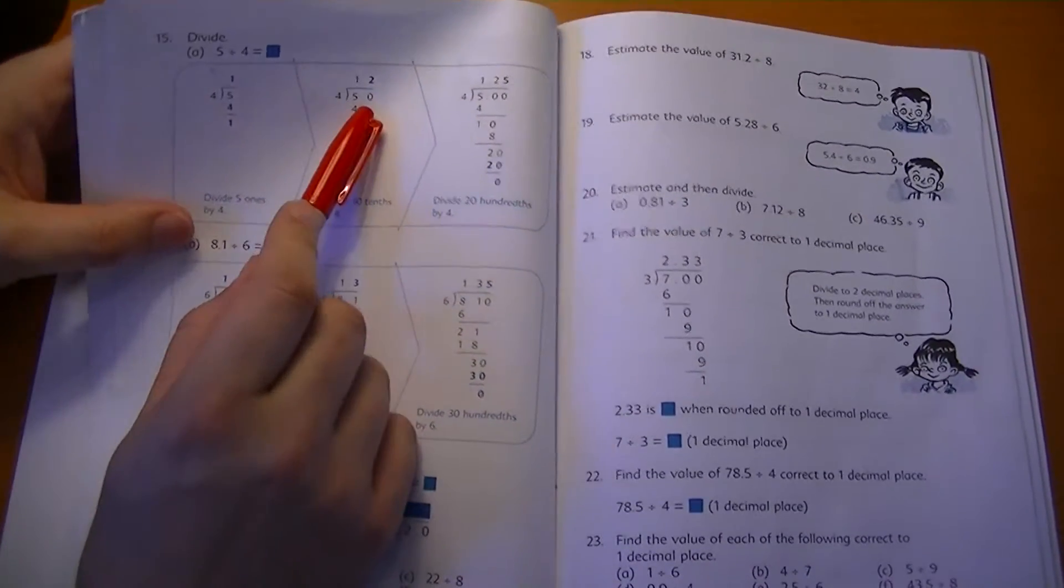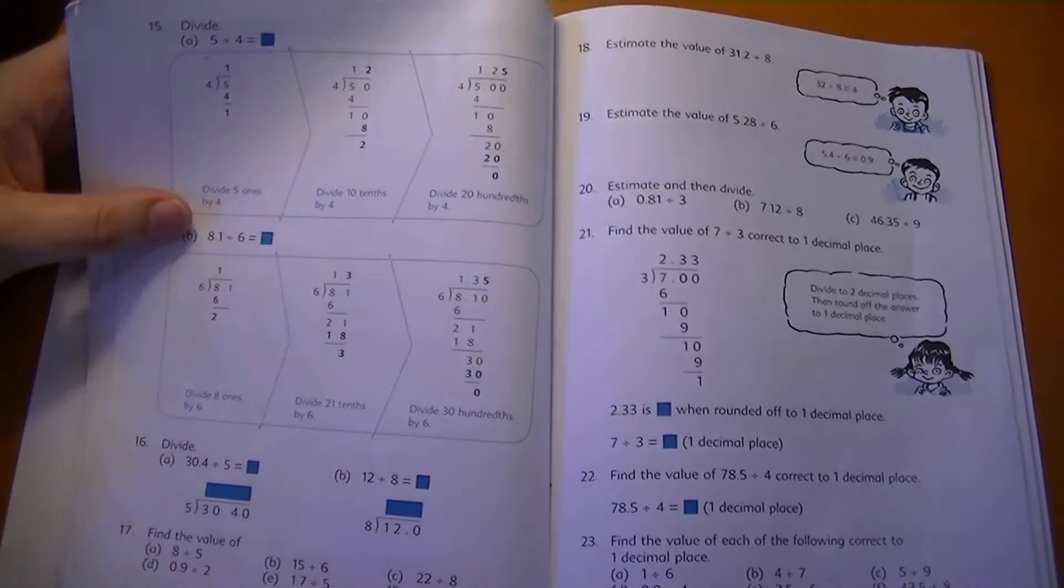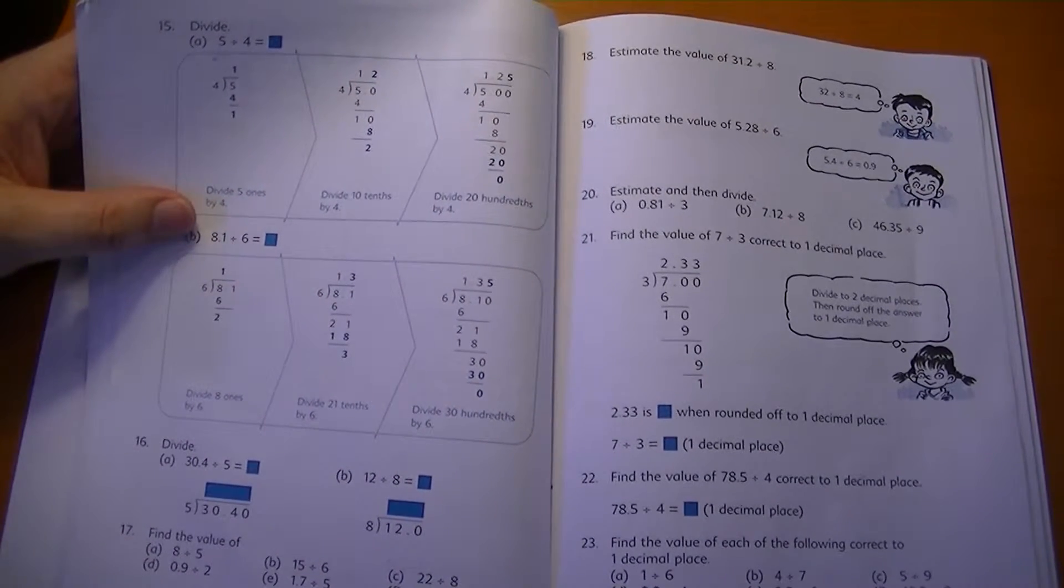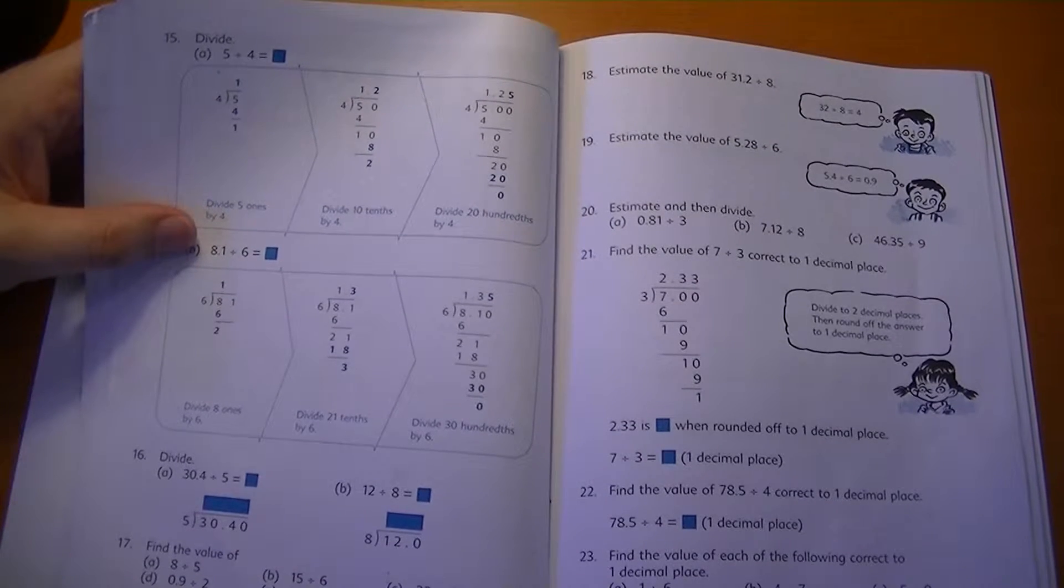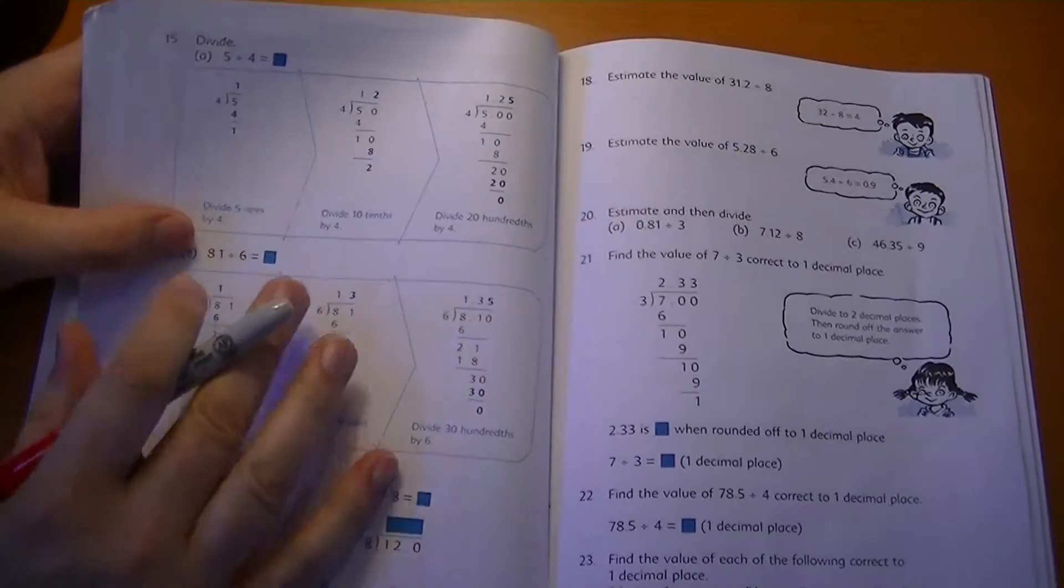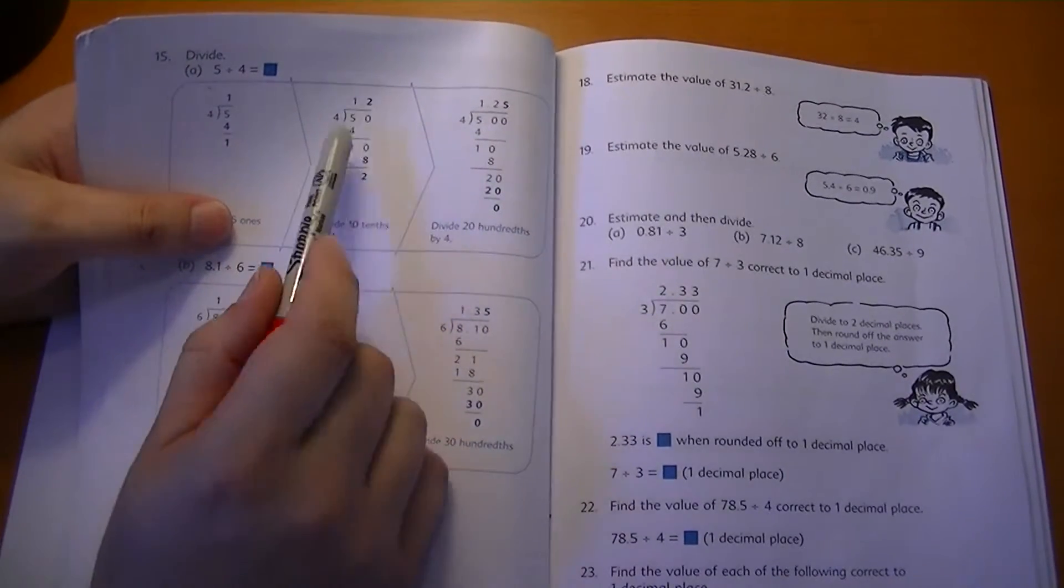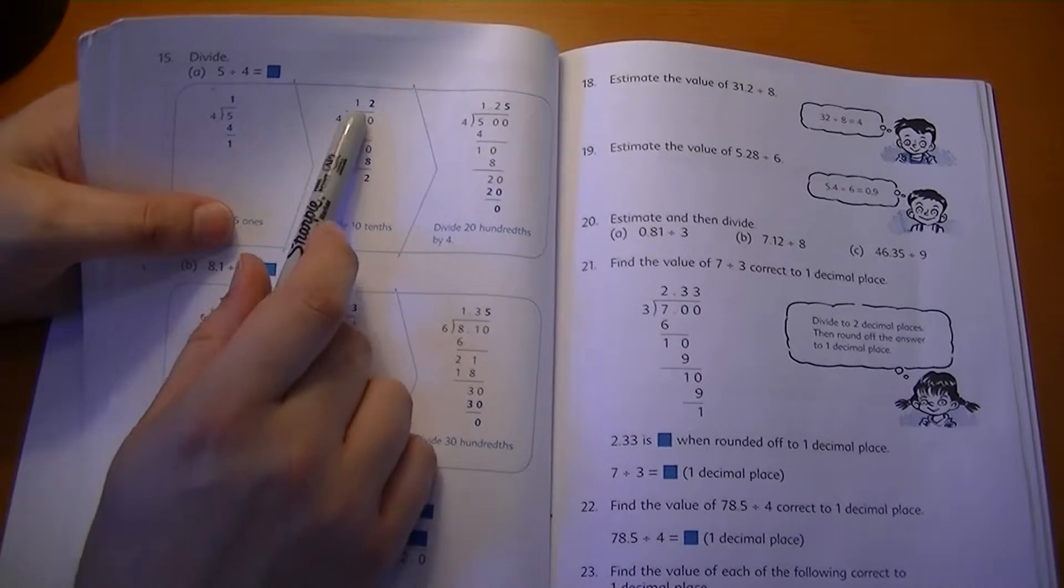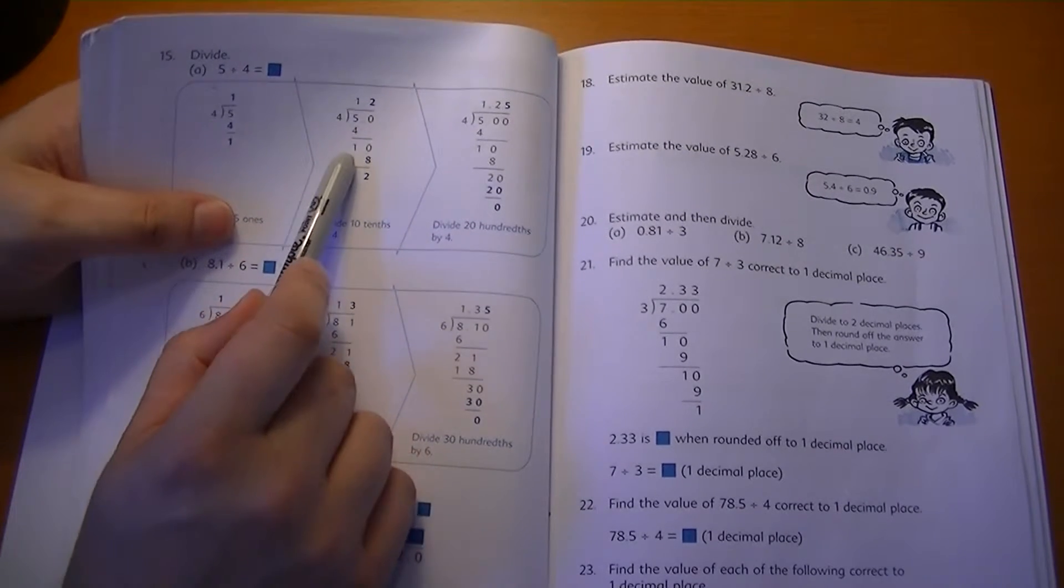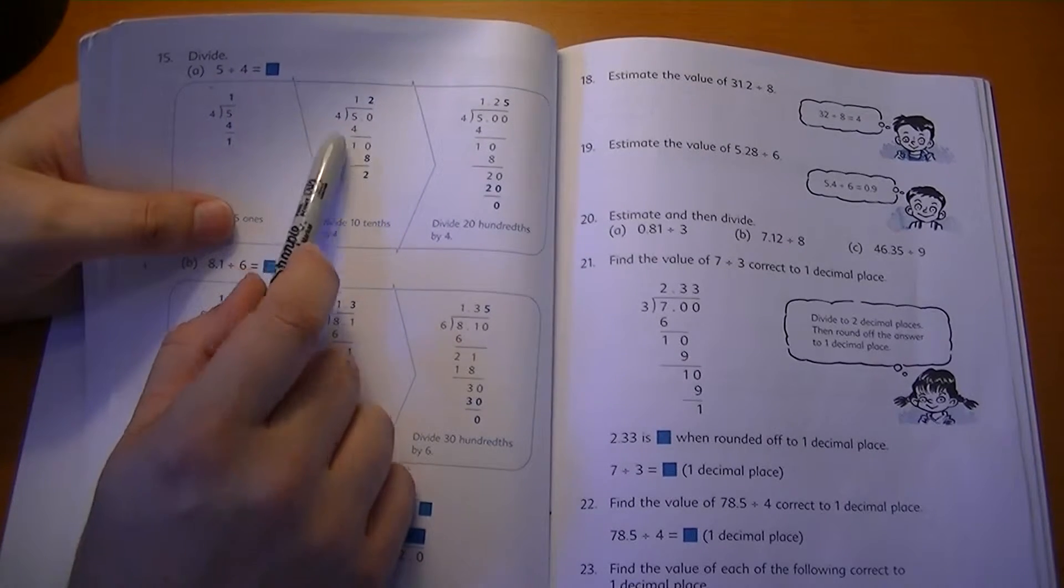What we do next is we add a zero. So 5.0. Now we're dividing 5.0 by four. Is 5.0 the same as five? It is exactly the same as five. Zero tenths is the same as zero. So you're adding zero tenths to five, no change. So four goes into five one time. Five minus four is one. Then we bring down the zero. Now we have ten.